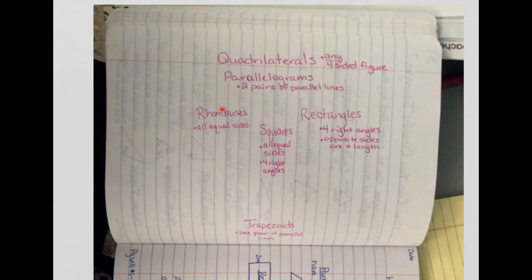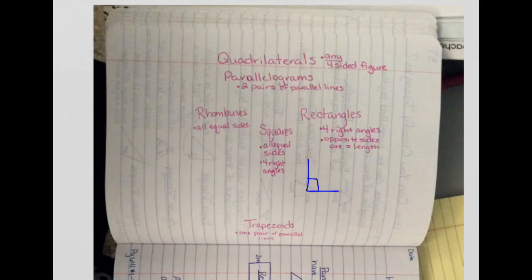Over here to the side you're going to write 'rhombuses.' Rhombuses have all equal sides. Squares have all equal sides and four right angles, and if you remember from your triangle page, a right angle is when it makes a little square in the corner like that — this is a right angle.